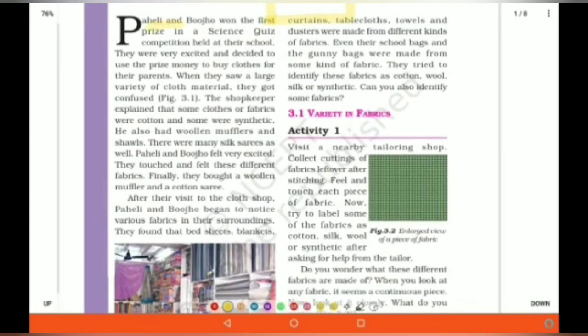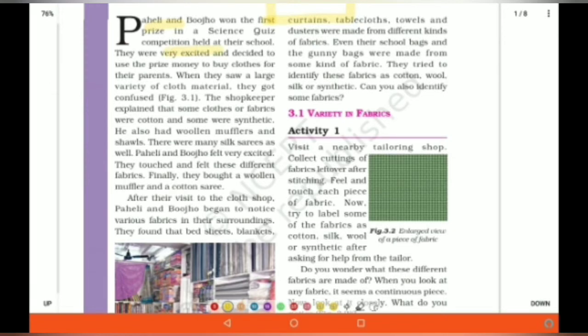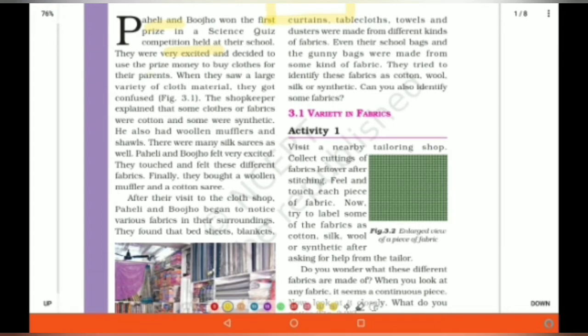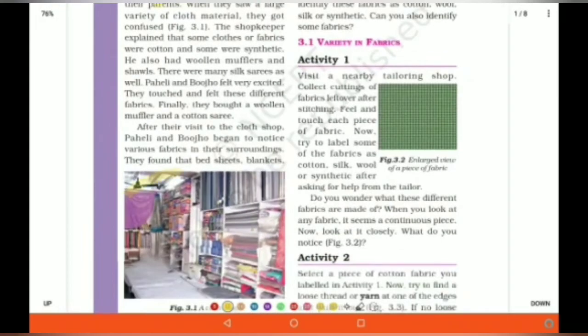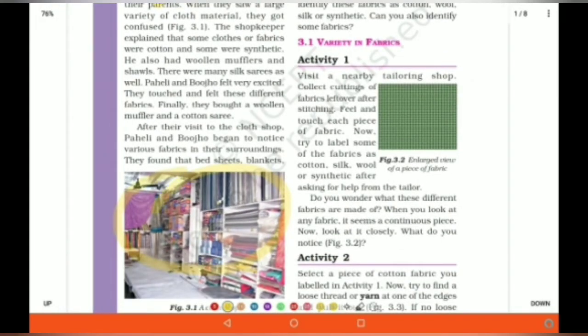Here Paheli and Bhojo won the first prize in a science quiz competition held at their school. The money which they got as a prize, they decided to buy some clothes for it. When they went to the shop, they found many, many types of clothes. Many variations in the clothes. So,